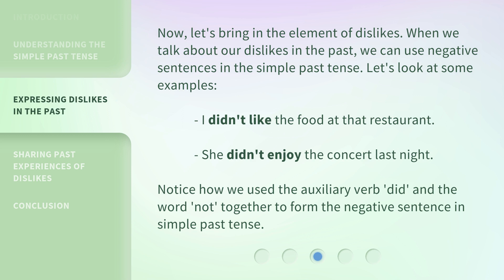Notice how we use the auxiliary verb did and the word not together to form the negative sentence in simple past tense.